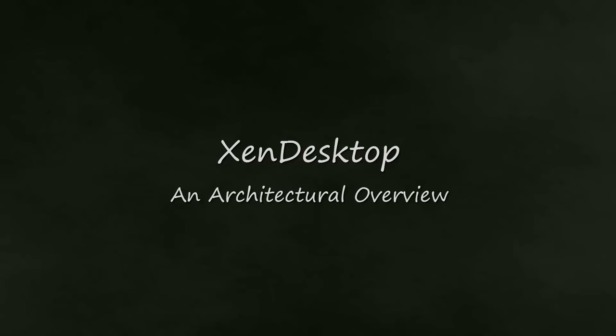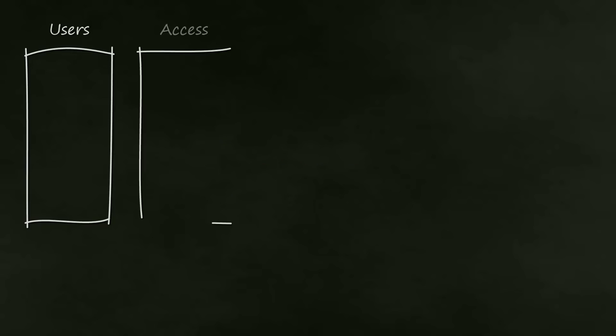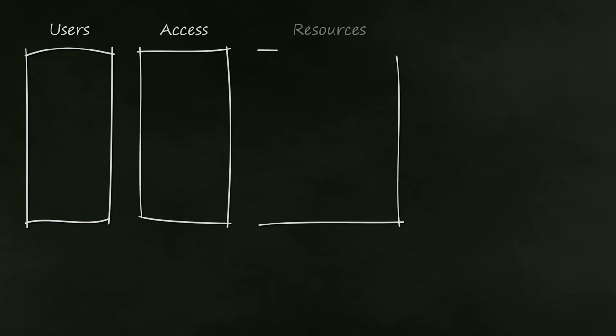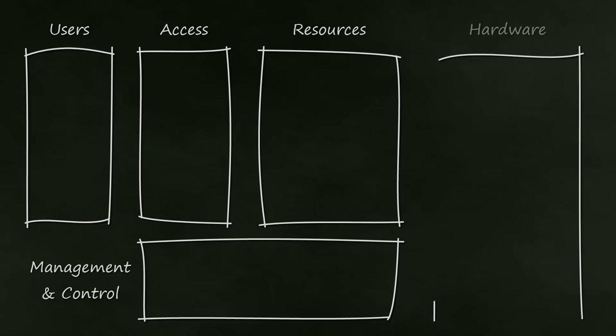Before we begin walking our way through a Zen Desktop implementation, we need to have a basic understanding of the conceptual architecture. Every Zen Desktop deployment can be broken down into five layers: Users, Access, Resources, Control Management, and Hardware.